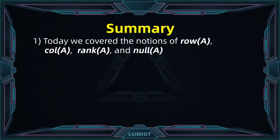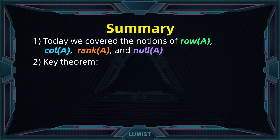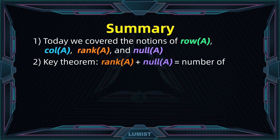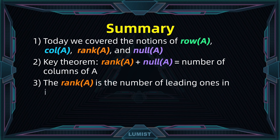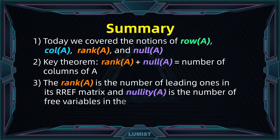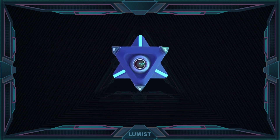Summary: today we covered the notions of row of A and column of A, as well as rank of A and nullity of A. Moreover, we related those concepts through a key theorem — the Rank-Nullity Theorem — which states that the rank of a matrix A plus its nullity is equal to the number of columns of A. We also saw a method to compute them: the rank of A is the number of leading ones in its reduced row echelon form matrix, and the nullity of A is the number of free variables in its reduced row echelon form matrix. This concludes our discussion on rank and nullity. See you next time.